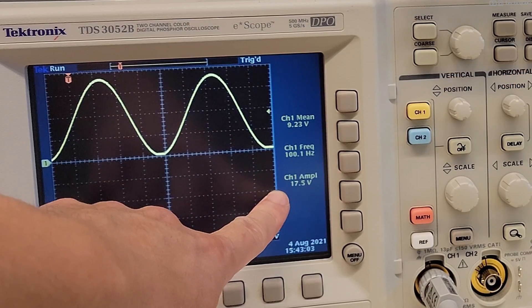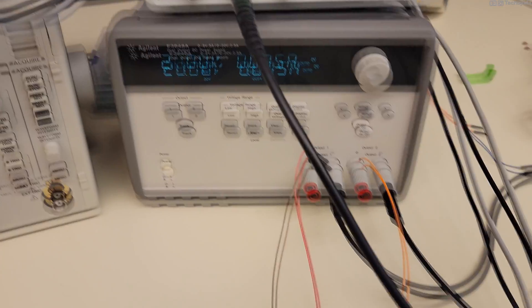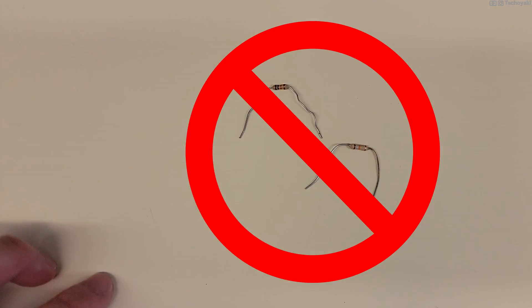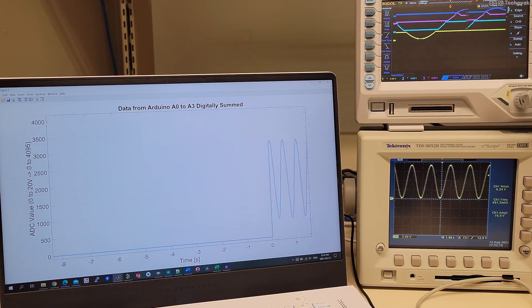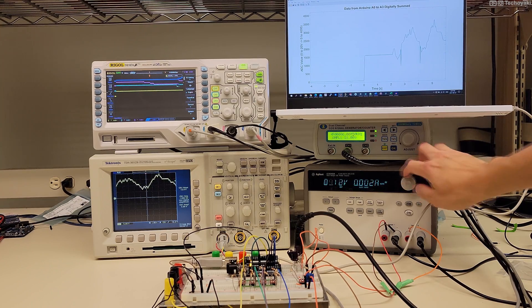This is an 18 volts peak-to-peak signal going into an Arduino operating at 5 volts. The signal isn't reduced in any way using some voltage divider. The Arduino is actually measuring over 18 volts without losing any resolution.